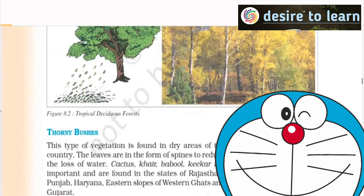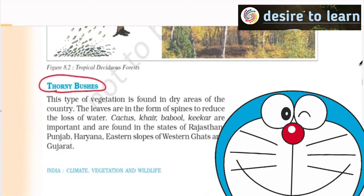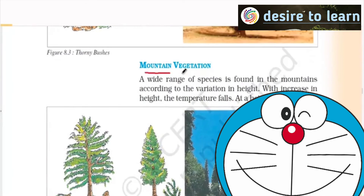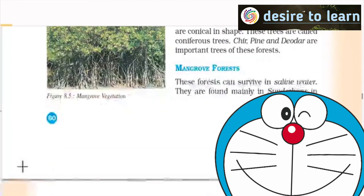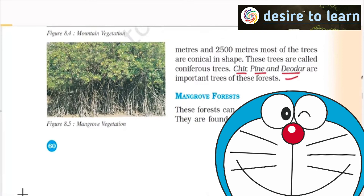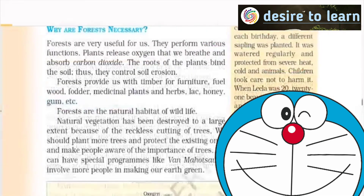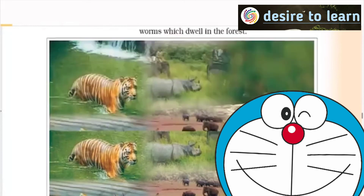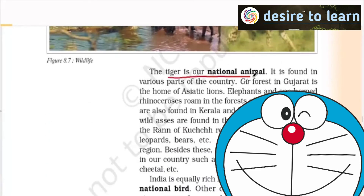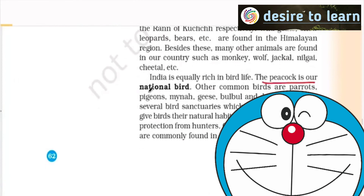India has a monsoonal type of climate. Moist deciduous forests are usually present more. You have thorny bushes, grasslands, and deserts. Then you have mountain vegetation — with increasing height, you get certain climatic conditions. Chir, pine, deodar are present in this region. Then you have mangrove forest wherever you have the coastal region where fresh water and salt water are present — we call it mangrove. Sundarbans near West Bengal and Bangladesh is a well-known example.